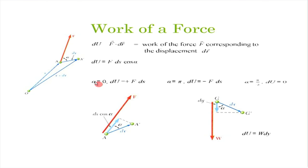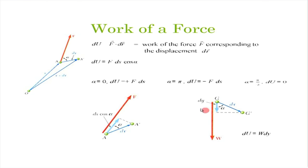Some special cases: when α equals 0, force and displacement are in the same direction, and the work is maximum, given as F times ds. When α equals π, force and displacement are exactly opposite, so work done is negative. This happens when you raise a particle against gravity — gravity acts downward, but we raise it upward, so gravitational force does negative work.